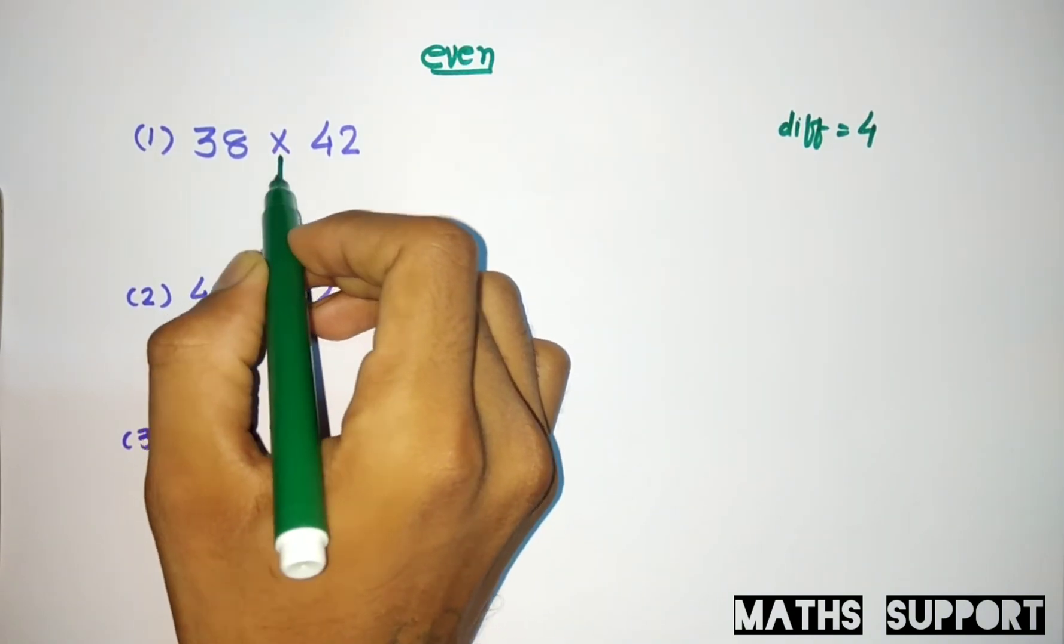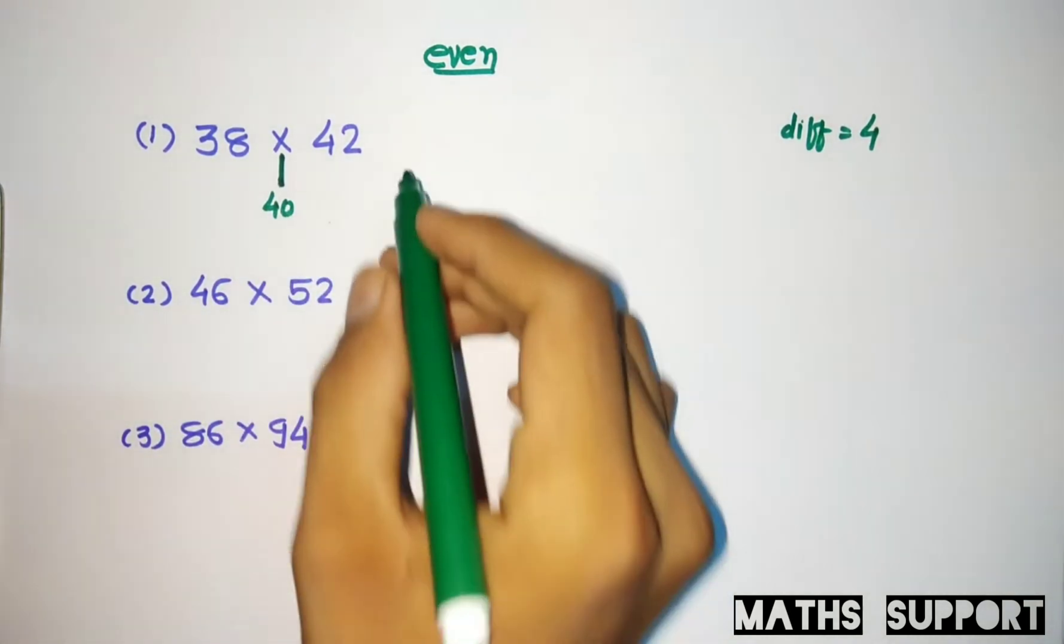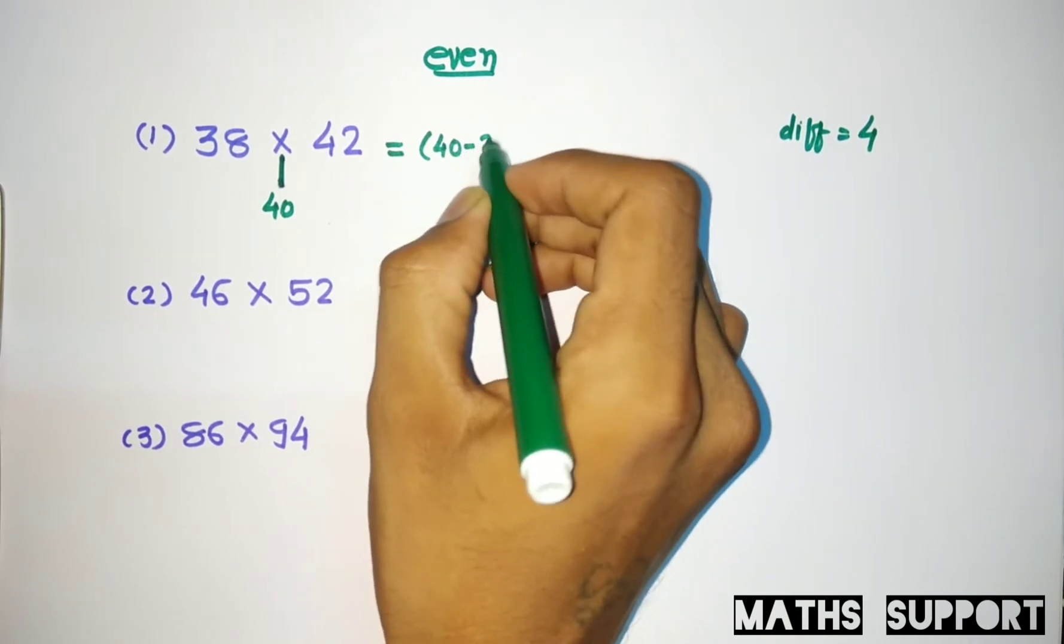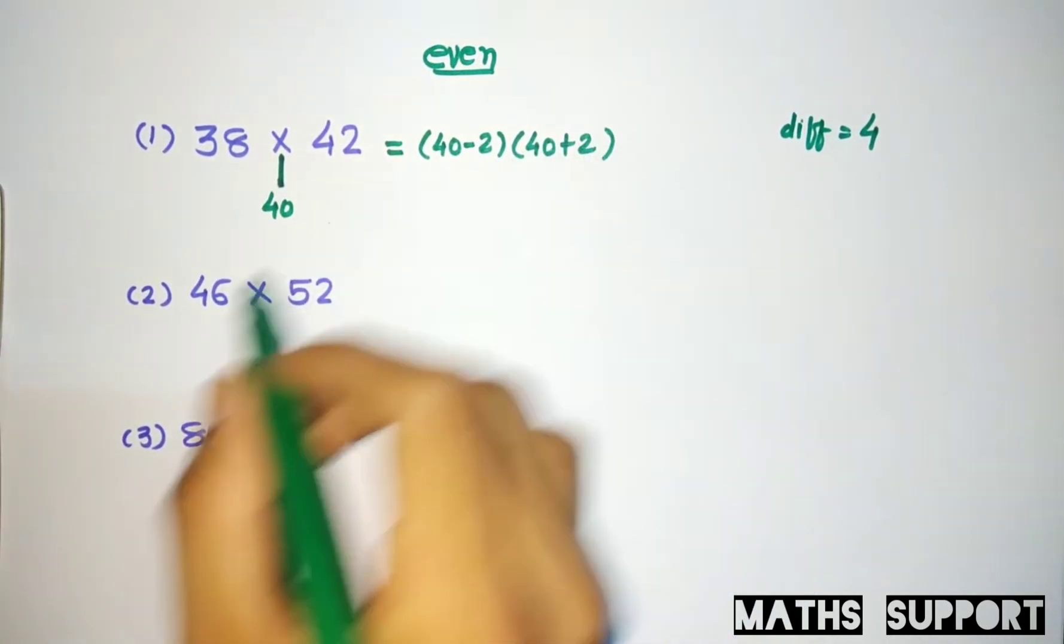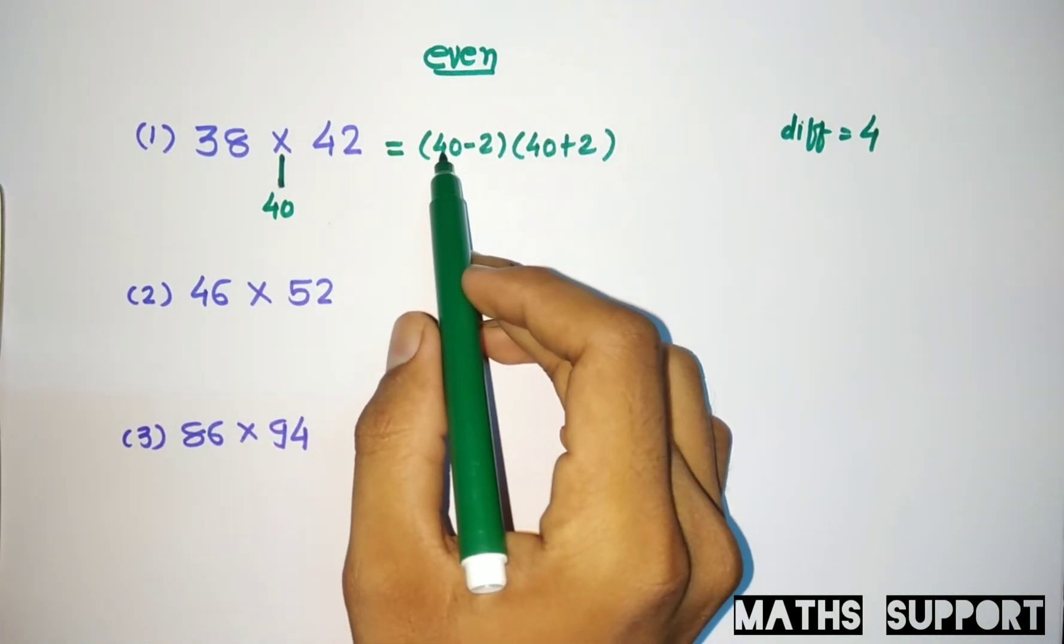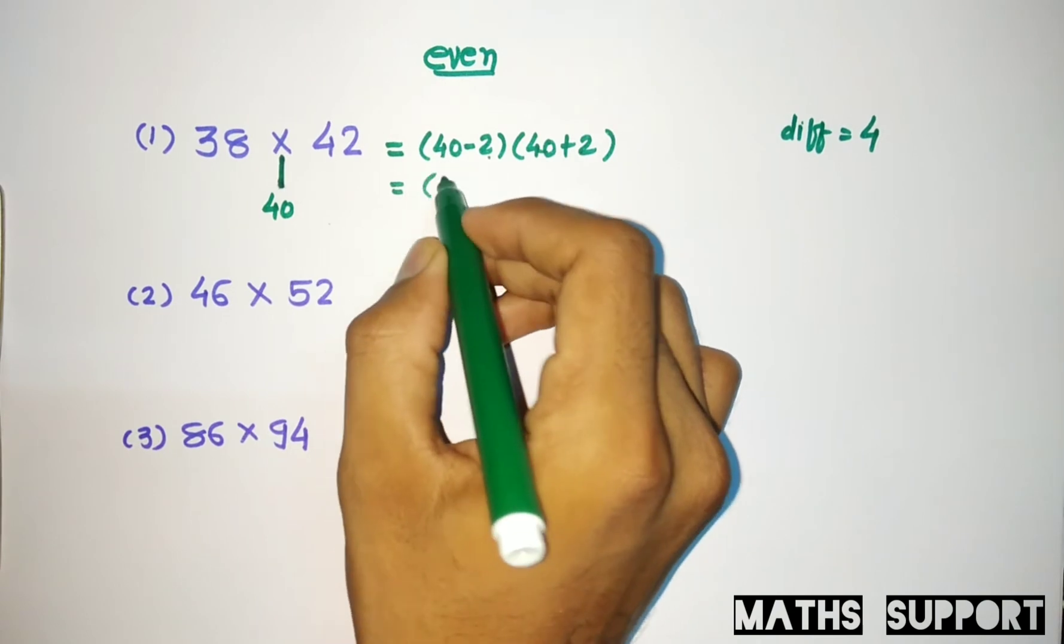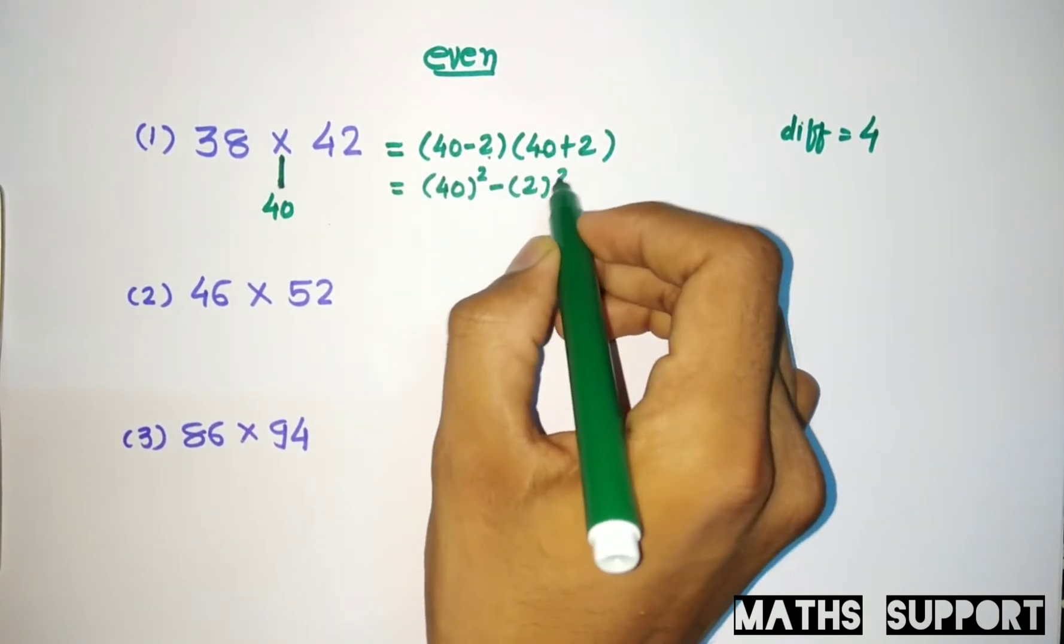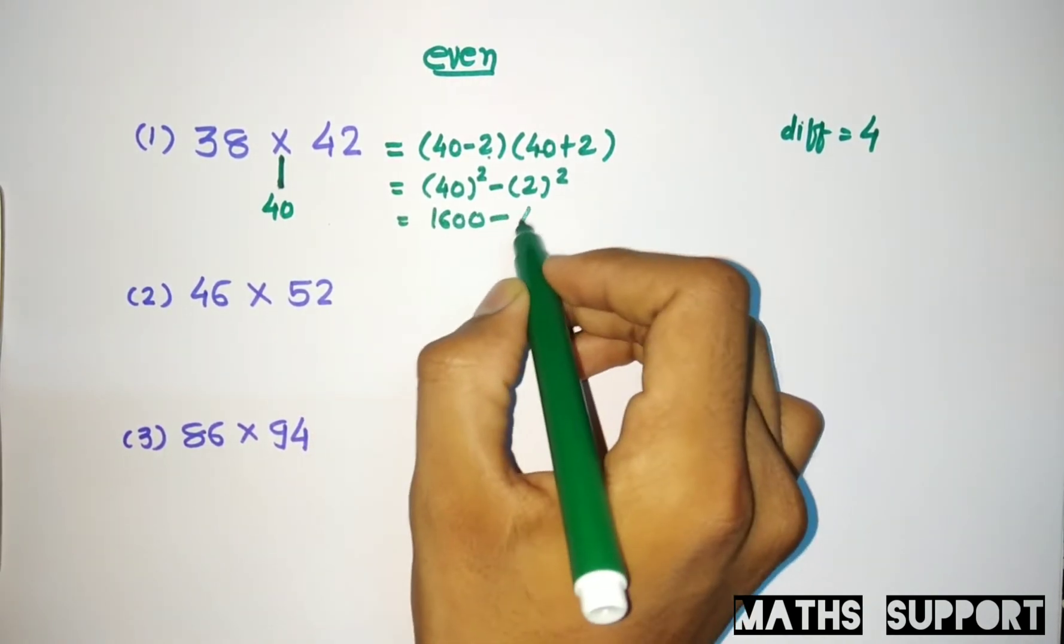Now it becomes the identity a minus b, a plus b, so it's nothing but a square minus b square. So it's 40 square minus 2 square. 40 square is 1600 minus 4, so your answer will be 1596. So that is very simple.